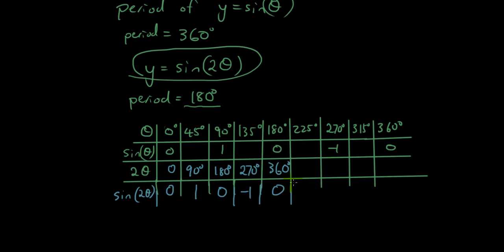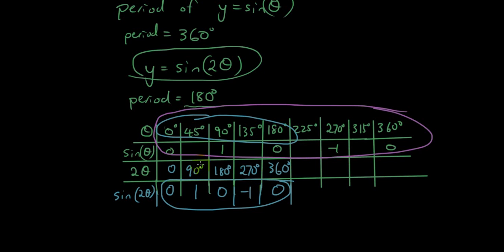So what's happened is the graph, the whole wave, now starts repeating itself within 180 degrees. Whereas it used to take 360 before it started repeating itself. Now it only takes 180 degrees before it starts repeating itself.